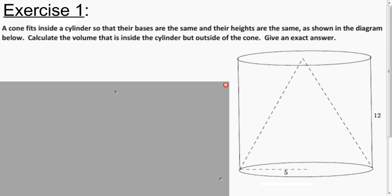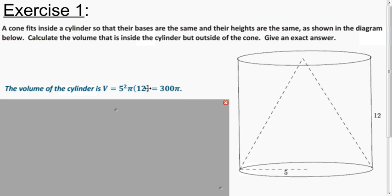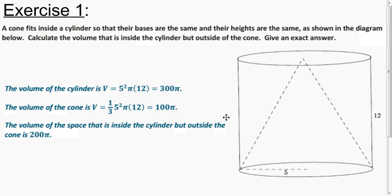Now it's time to practice our formulas. Try Exercise 1, and then I'll show you my solution. The formula for the cylinder is pi r squared times the height, so 300π. The volume of the cone is one-third of that, so 100π. Now it wants to know the volume that's in the cylinder but outside the cone, so we subtract them and get 200π. Remember, when it says an exact answer, that means don't give a decimal approximation — leave your answer in terms of pi.